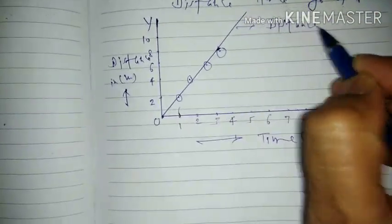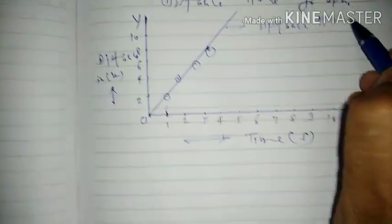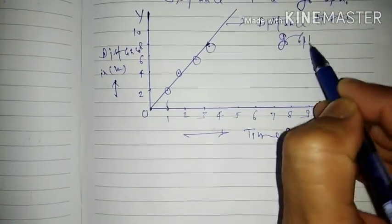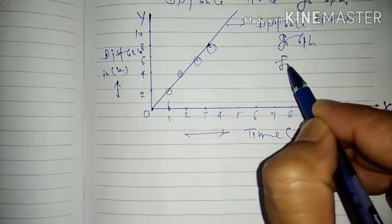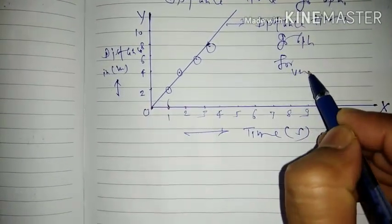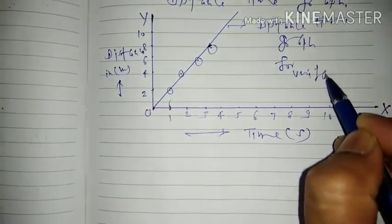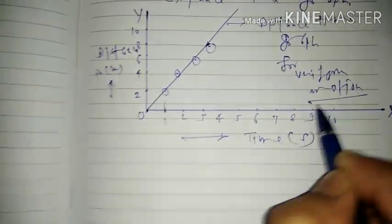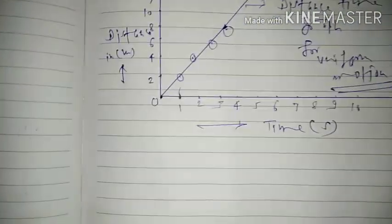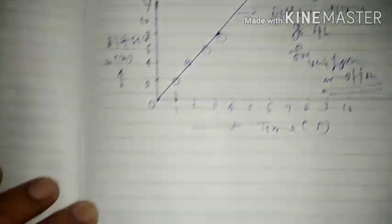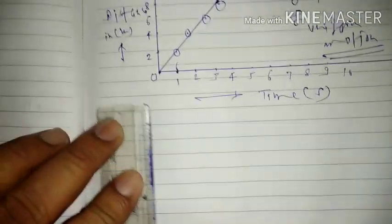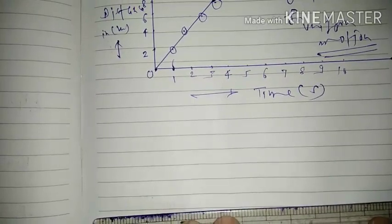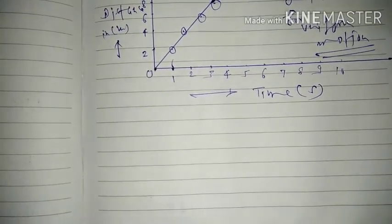This is the distance-time graph for uniform motion. Now the situation will change. In the second case, once again we take time on the x-axis.